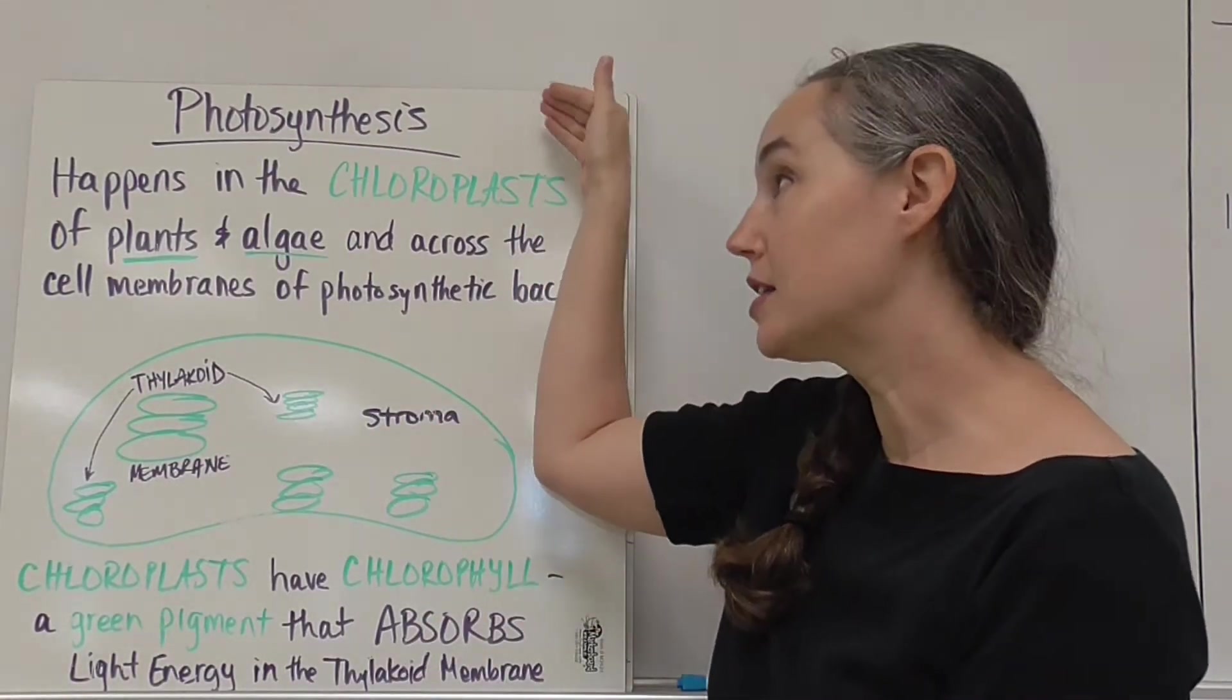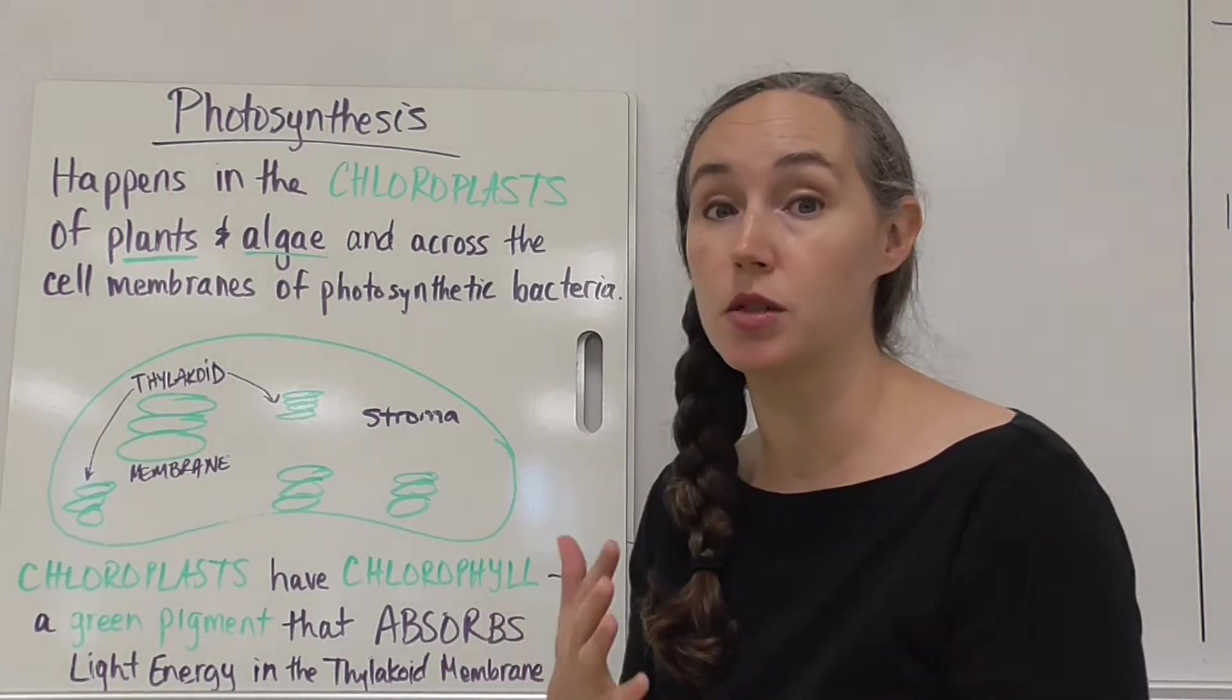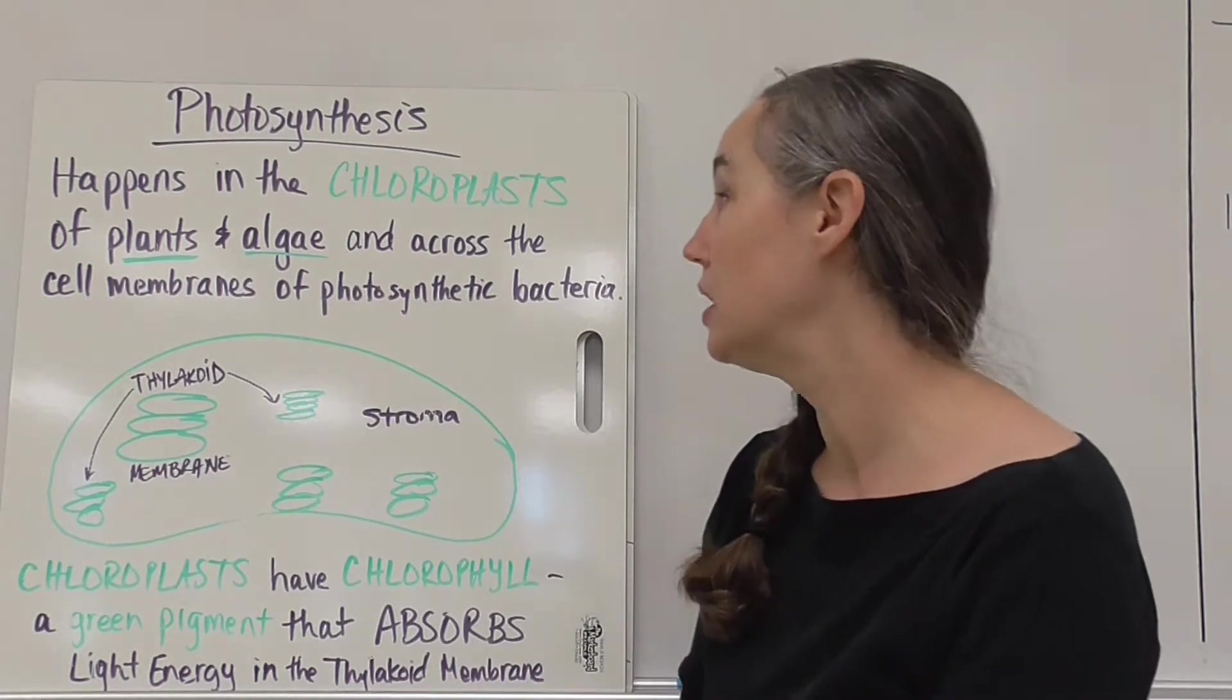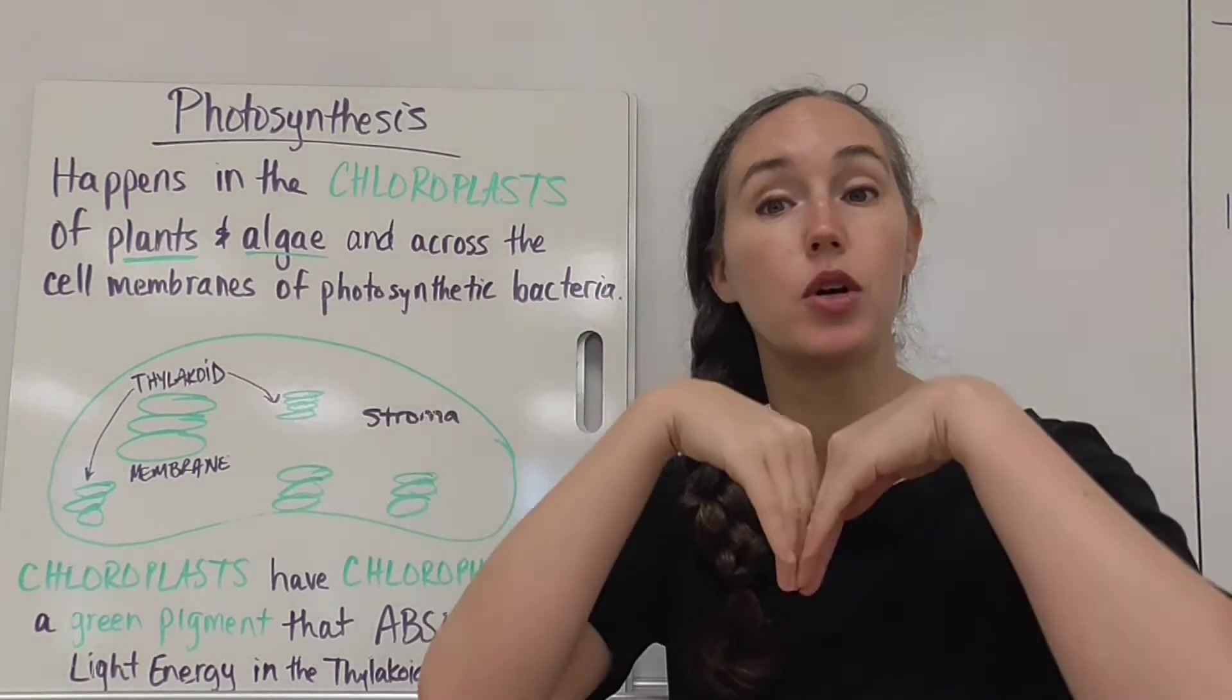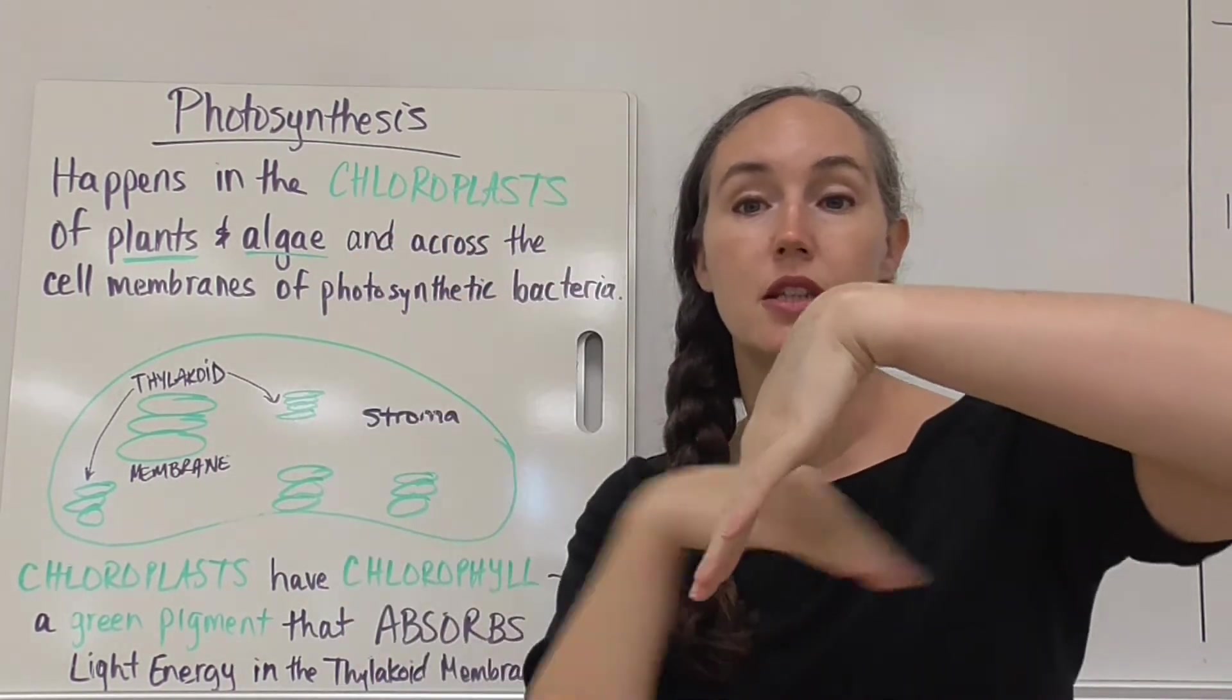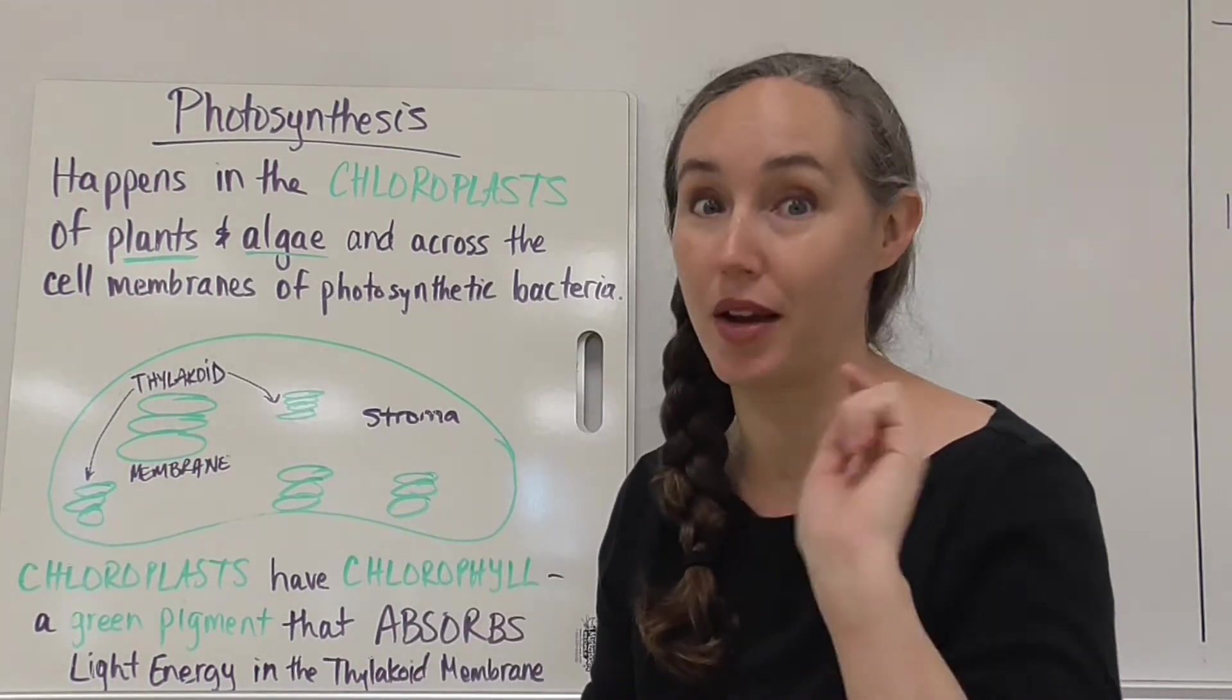The process of photosynthesis in eukaryotes happens in the chloroplast. So the eukaryotic organisms we're talking about here are like plants and algae, but photosynthesis also occurs in some prokaryotes and it does that across the infoldings of cell membranes of some photosynthetic bacteria. So instead of like a solid flat membrane it folds in and the photosynthesis process is happening across those membranes because you've got to have membranes to make photosynthesis happen.